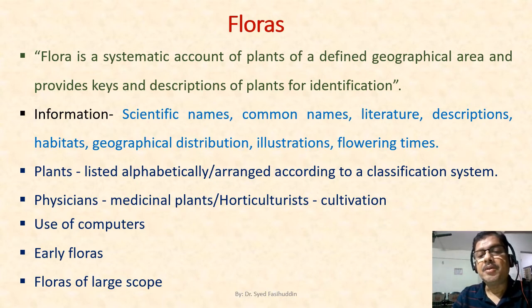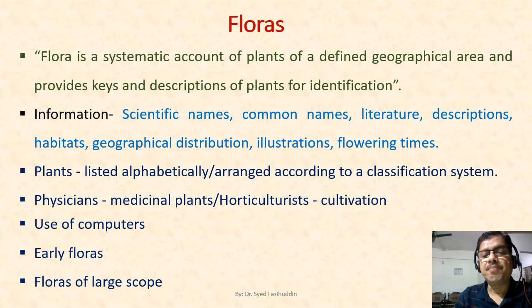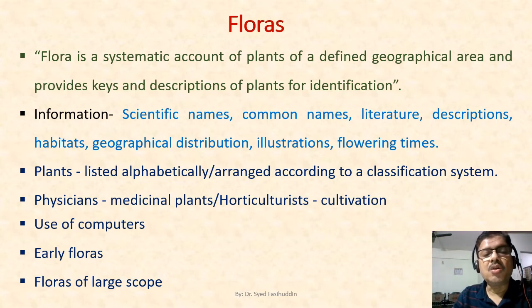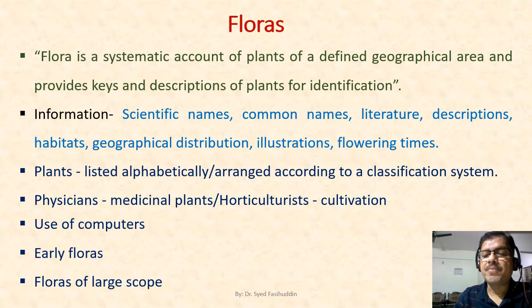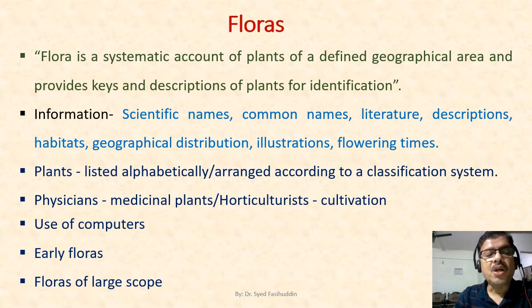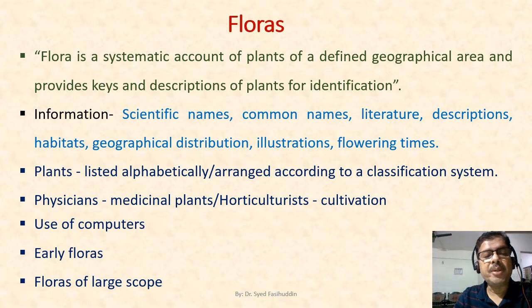Sometimes plants are listed alphabetically and sometimes they are represented within a classification system that indicates which plants are most similar or thought to be related. Floras often include devices called keys that enable the user to identify an unknown plant.